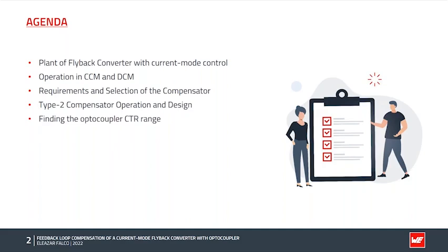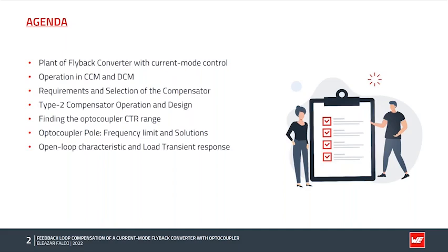As required for the compensator DC bias design, we will learn how to estimate the variation of the optocoupler current transfer ratio (CTR) for our specification. We will also learn how to overcome the limitation of the optocoupler frequency limit with two different compensator design examples. We will look into the resulting characteristics of the open-loop transfer function and the load transient response, and we will see the effect that optocoupler CTR and pole frequency variations might have on the system, followed by experimental results.